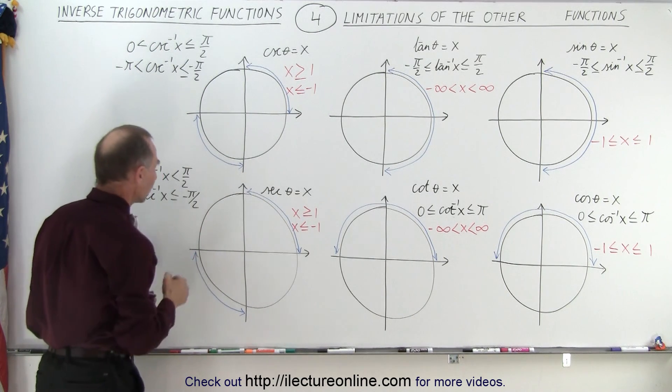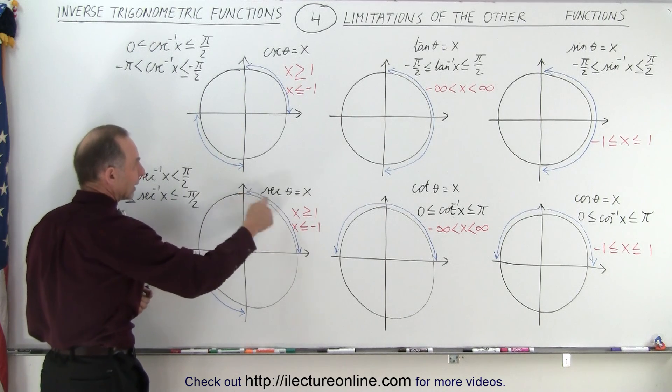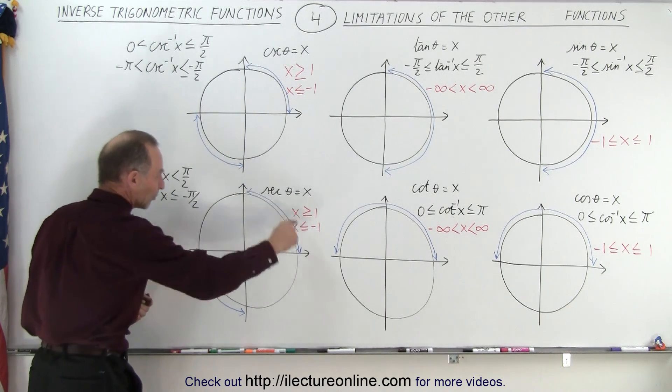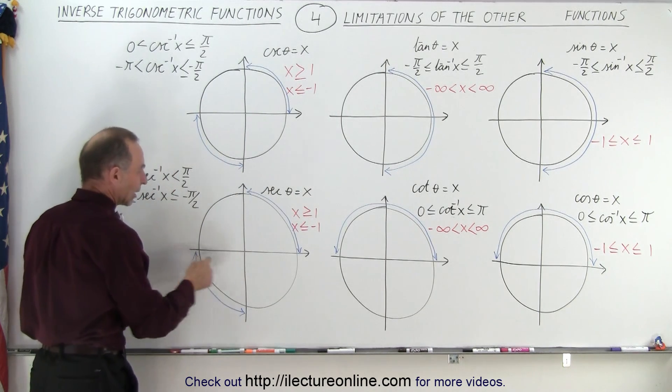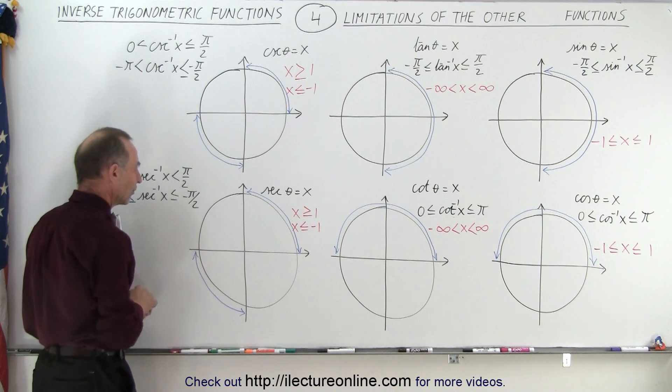The same for the secant, the range of angles are from 0 to 90 or from 0 to pi over 2 and from negative pi over 2 to the negative pi or negative 90 to negative 180.